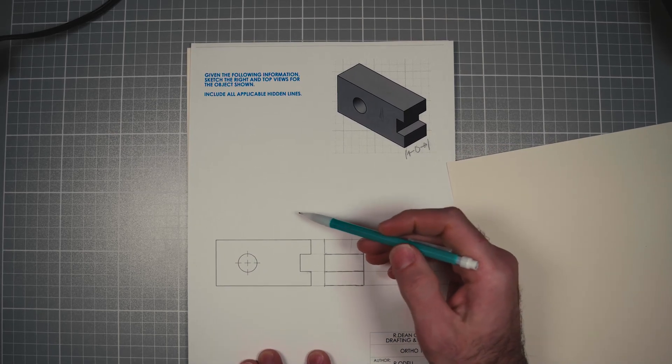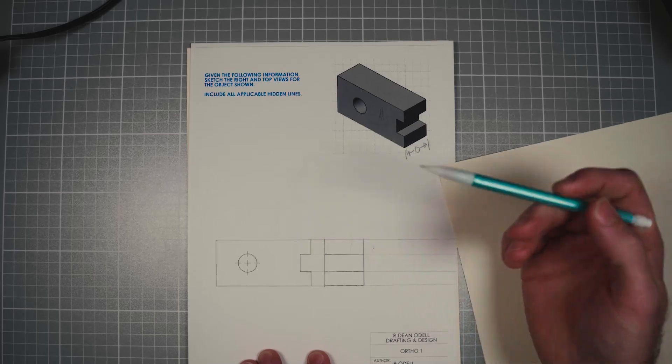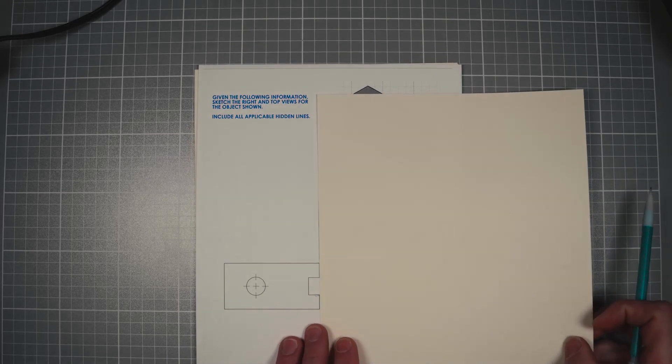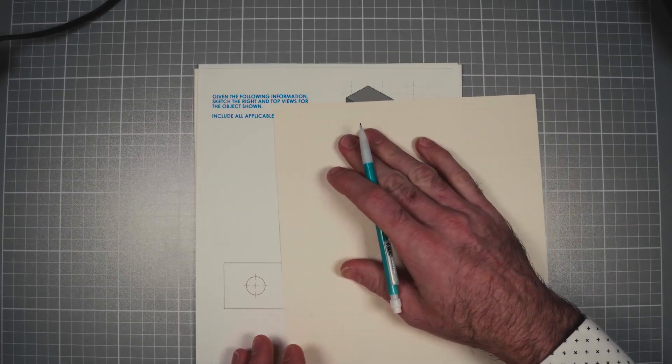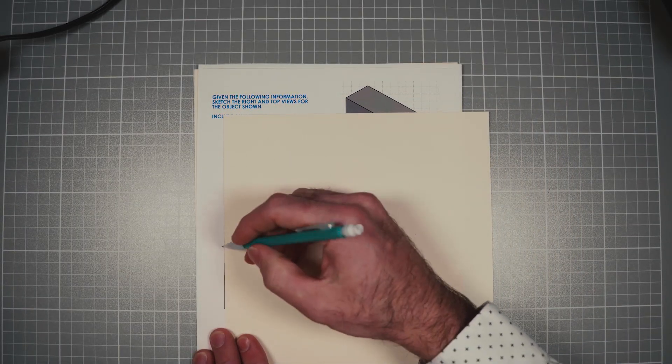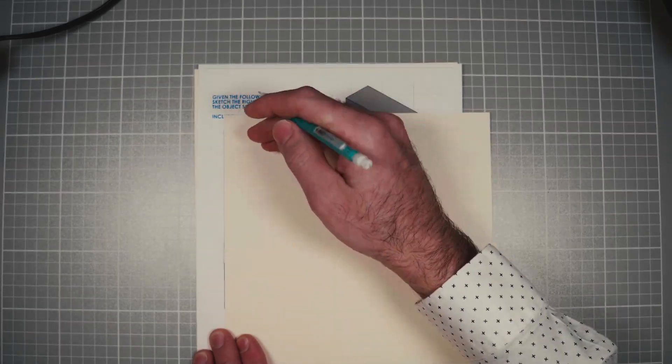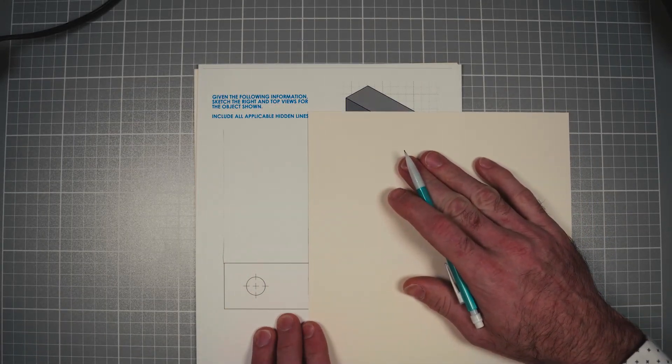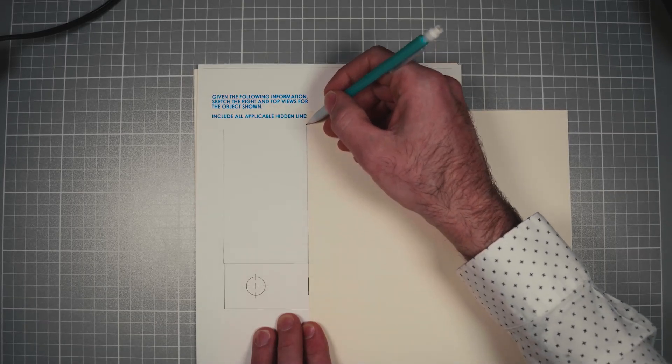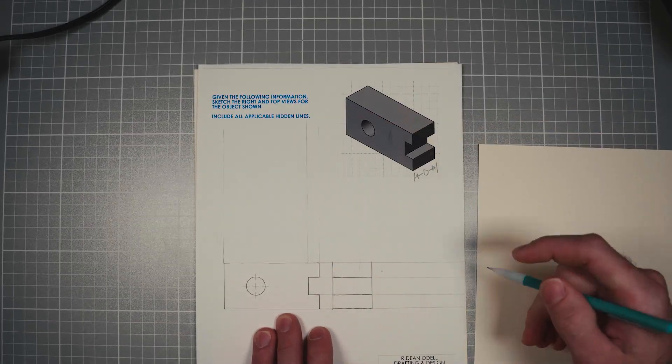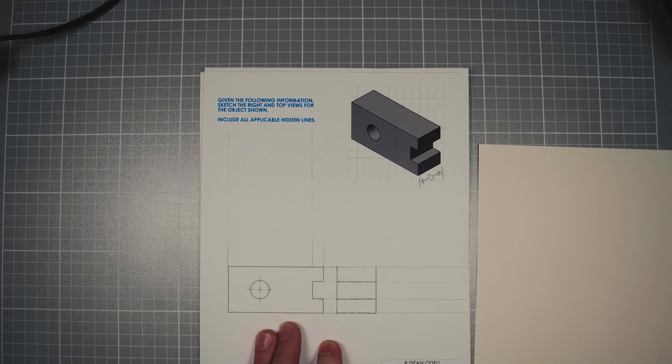So now we got to do this top view. So we're going to do the projectors just like we did before. So I'll do projectors coming from this side of the part going straight up and there'll be one projector coming from the bottom of this little cut. They didn't turn out perfect but they'll be good enough for what we need.